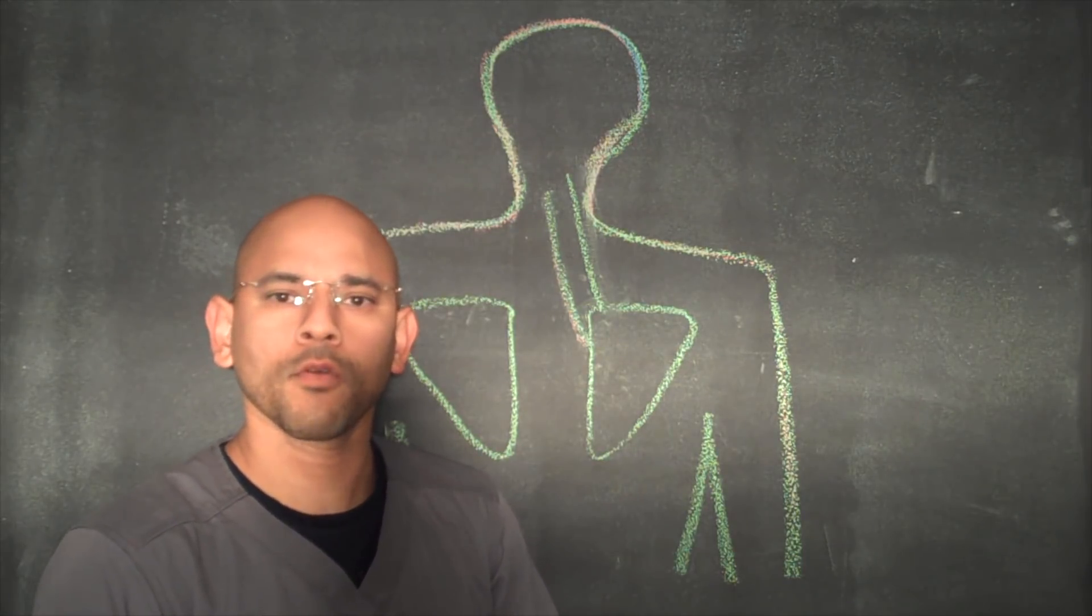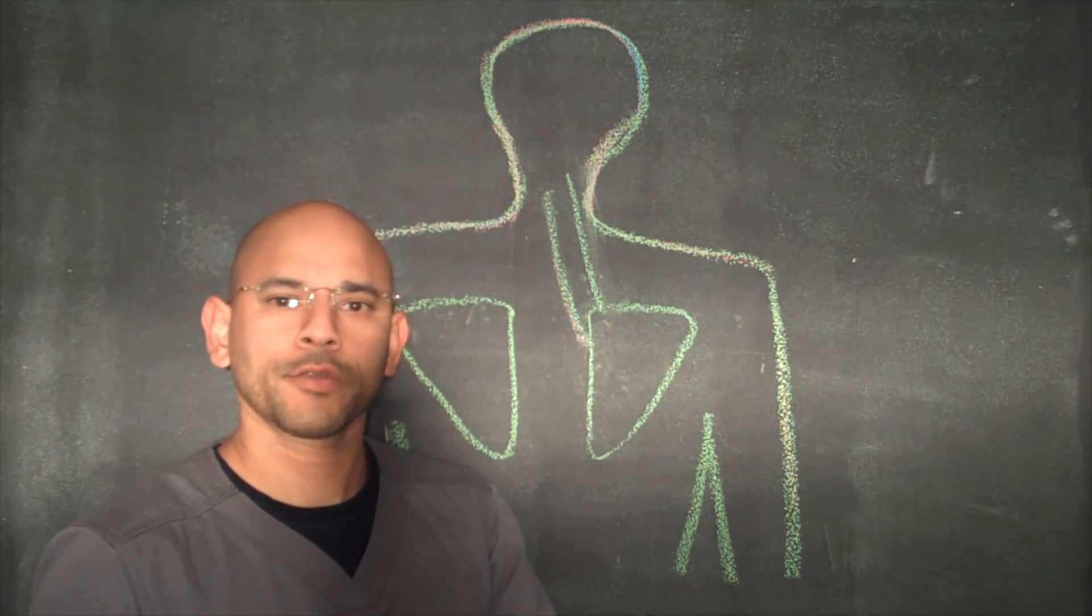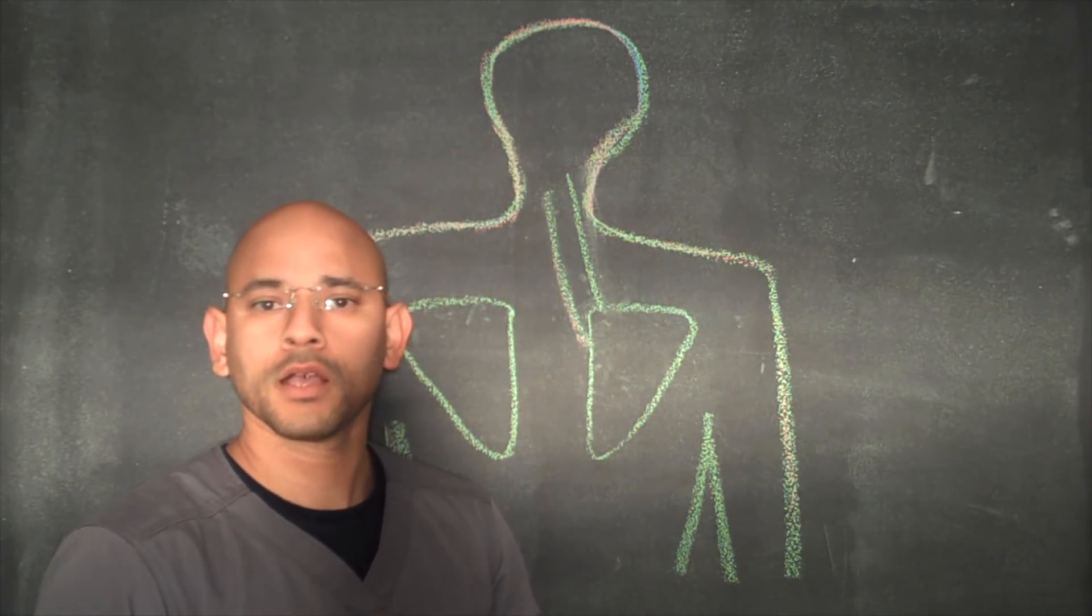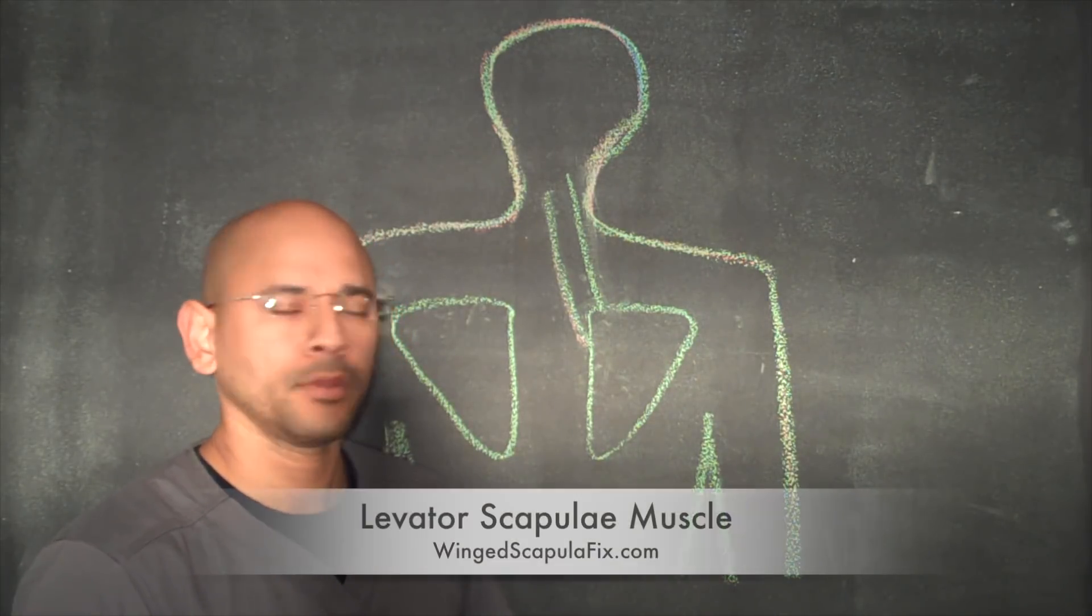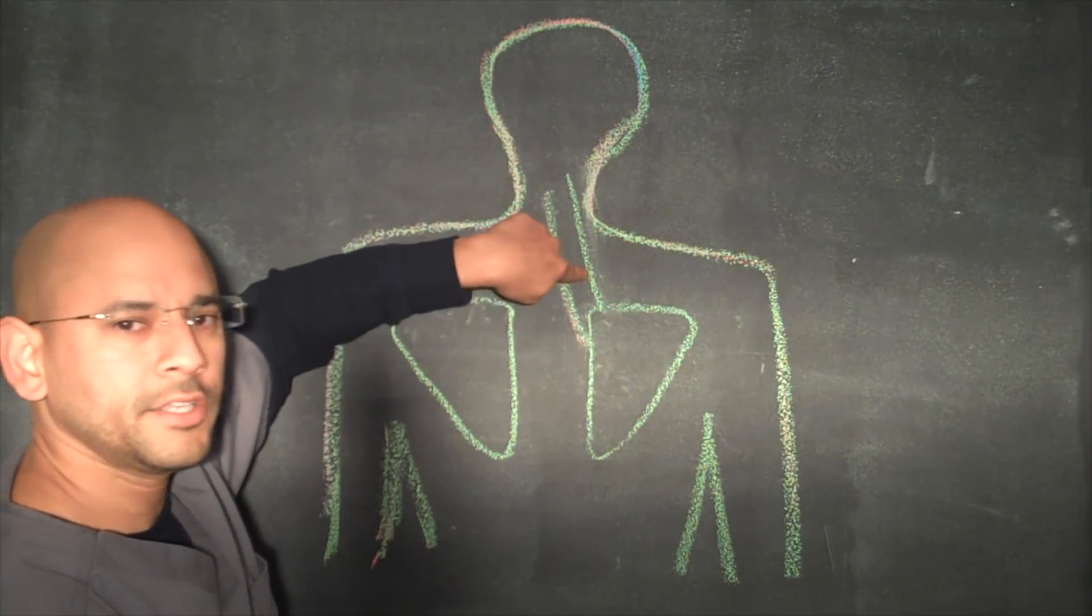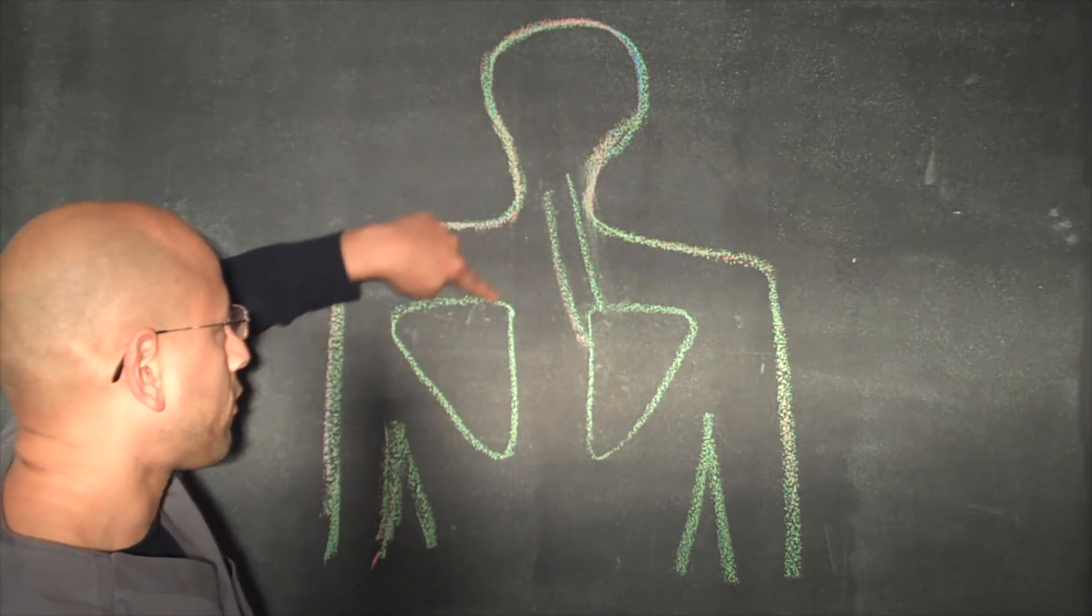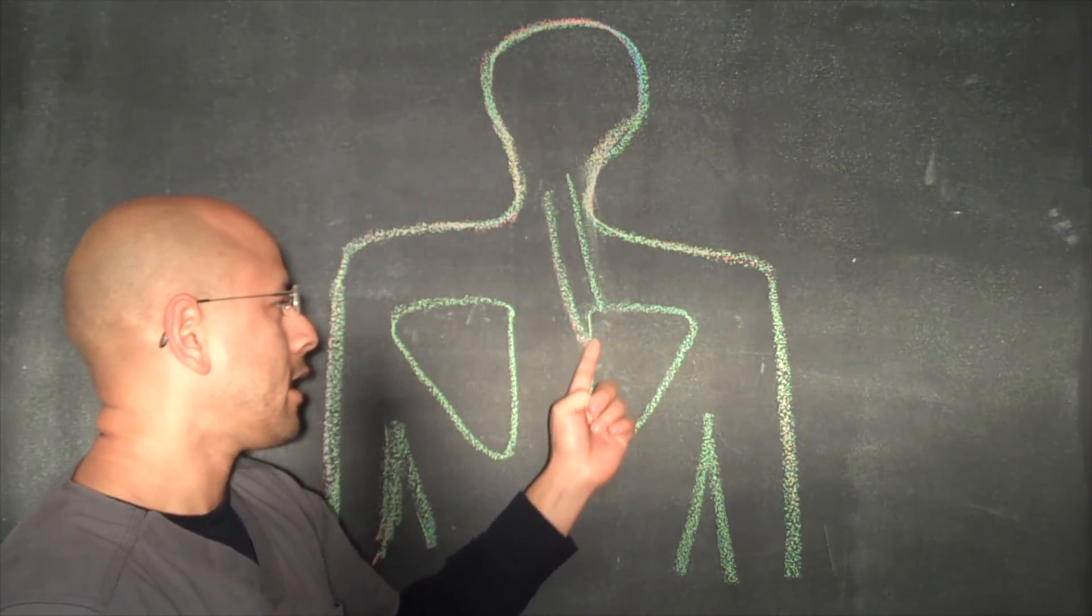Another thing we want to look for is any tightness in muscles that attach to the shoulder blade. So we not only have the serratus anterior muscle, we also have several muscles as well and the one we're going to focus on today is the levator scapulae. The levator scapulae is this muscle right here and we have one on each side. It attaches from the neck area to the superior angle over here of the shoulder blade.